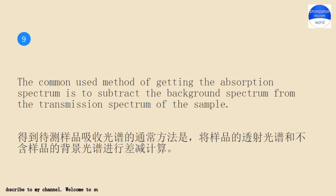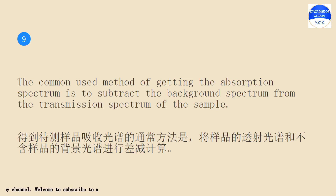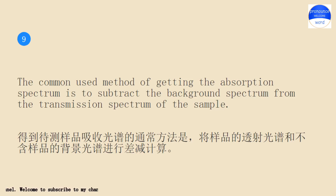The common used method of getting the absorption spectrum is to subtract the background spectrum from the transmission spectrum of the sample. The common used method of getting the absorption spectrum is to subtract the background spectrum from the transmission spectrum of the sample.